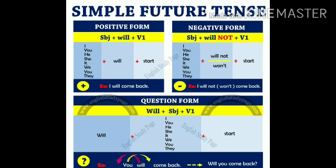Now we see the negative form. The structure is: Subject + will not + V1. Here V1 is also used in simple future tense. All subjects — I, you, she, he, it, we, they — are followed by 'will not,' which makes it a negative form. For example: 'I will not start.' The short form of 'will not' is 'won't.' Positive: 'I will come back.' Negative: 'I will not come back,' or 'I won't come back.'